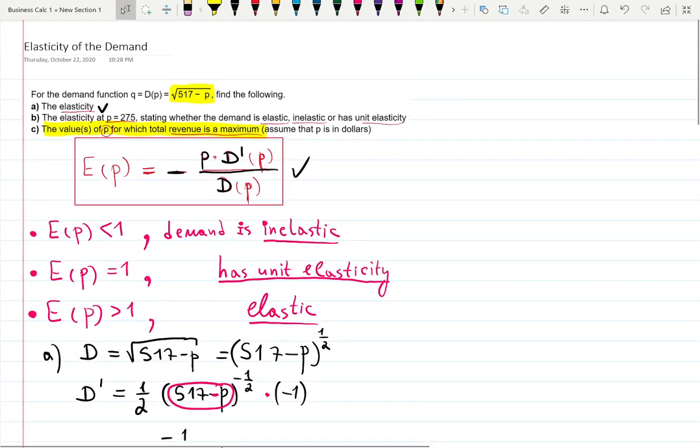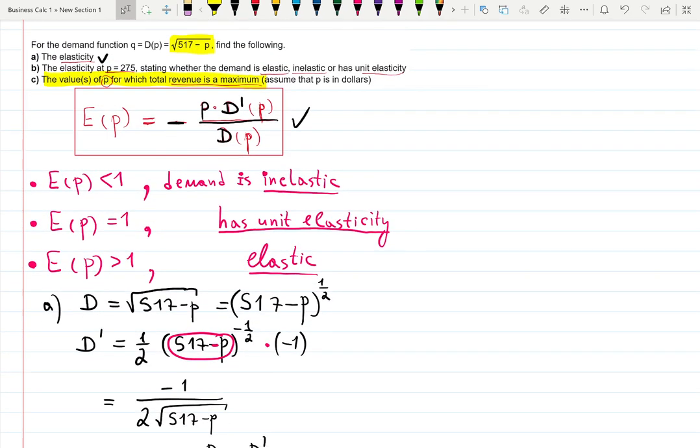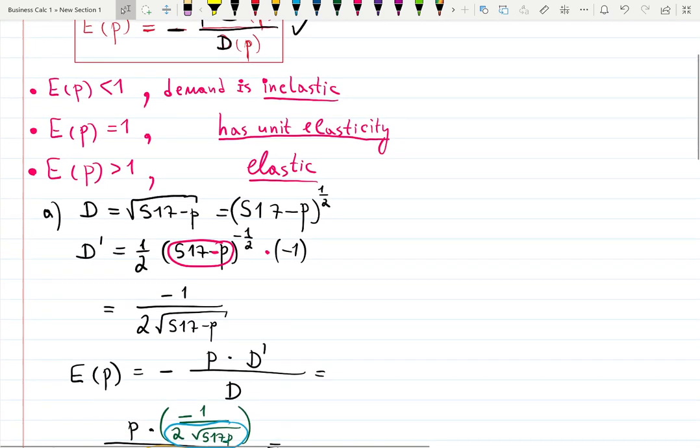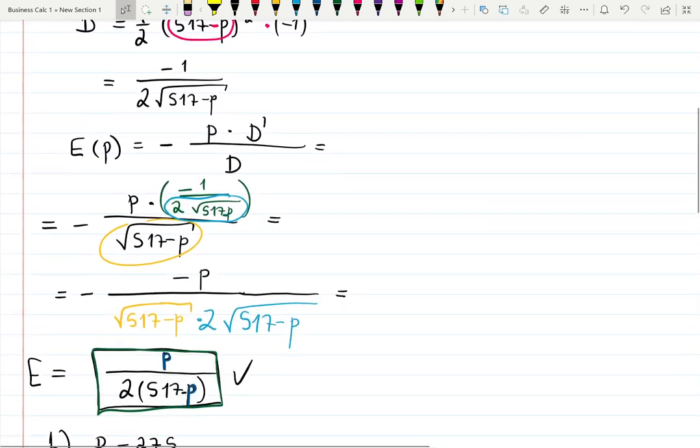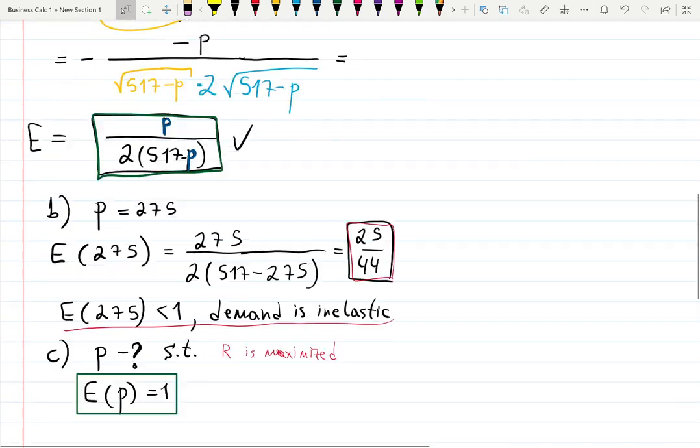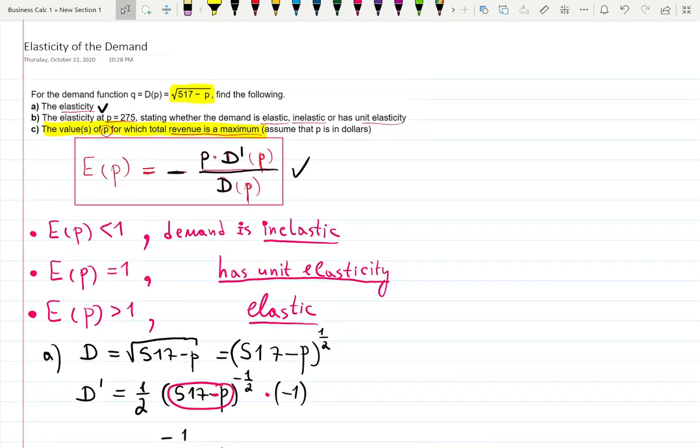Let's see how much information you need to know for one problem. You need to know the equation for elasticity of the demand function: E(p) = -p times the derivative of the demand function over the original demand function. You need to know what to claim about the demand function when it is inelastic, elastic, or has unit elasticity.